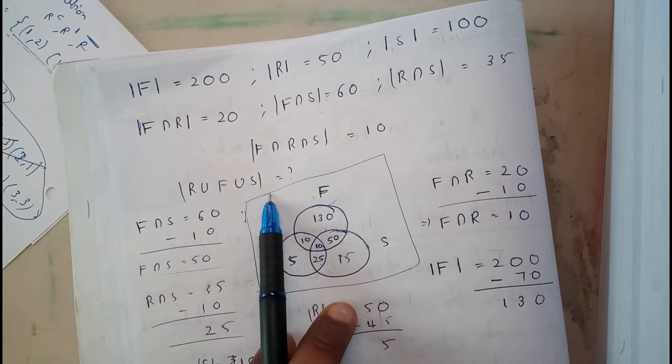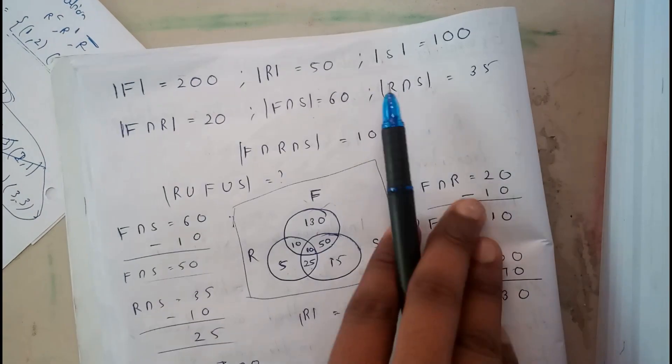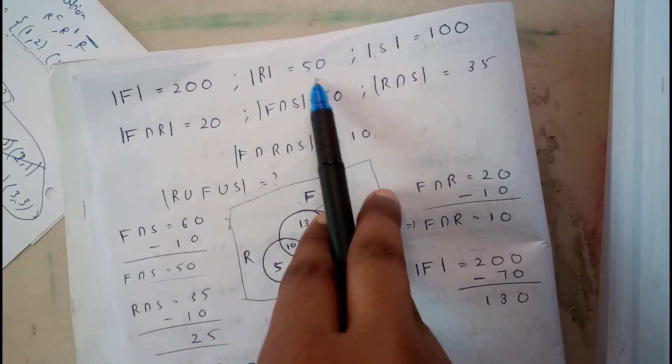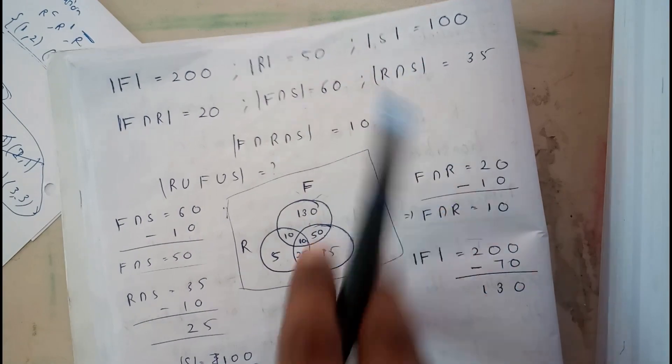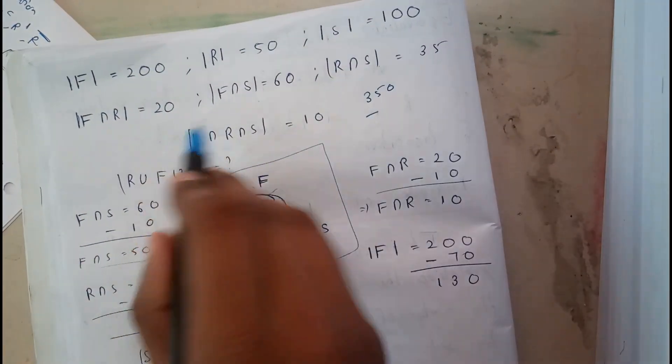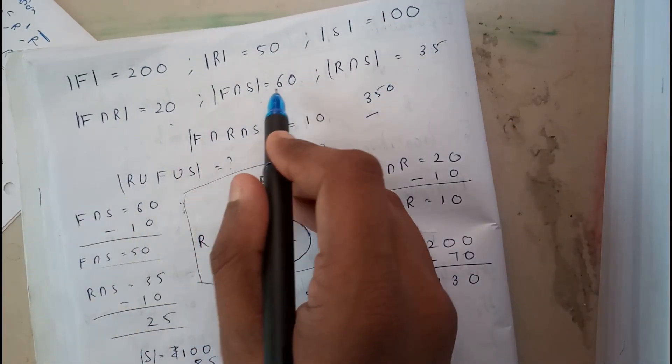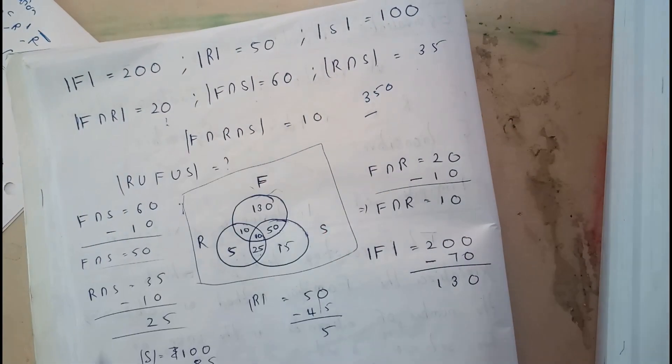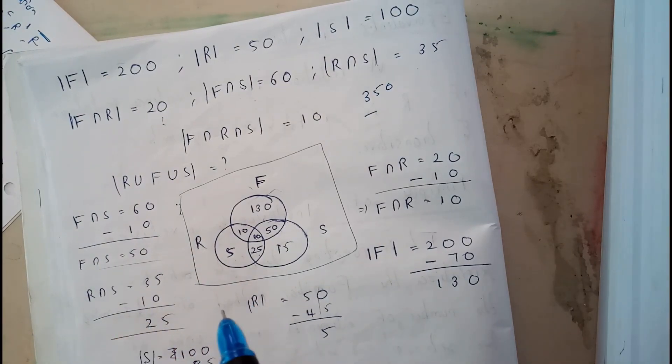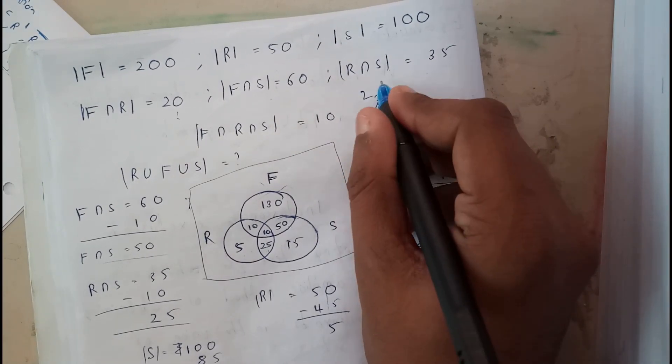Drawing the Venn diagram for this, or you can directly substitute it in the formula. You will be adding 200 plus 50 plus 100, which is 350, minus 60, 35, 20. You'll be subtracting those three. 60 plus 20 is 80, 90, 100, 115. You'll be subtracting 115.